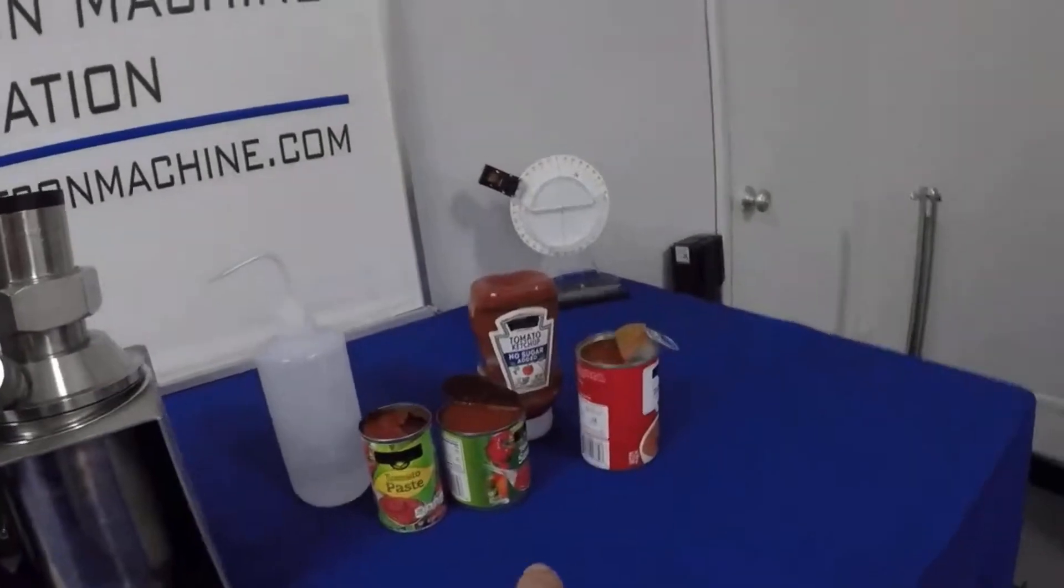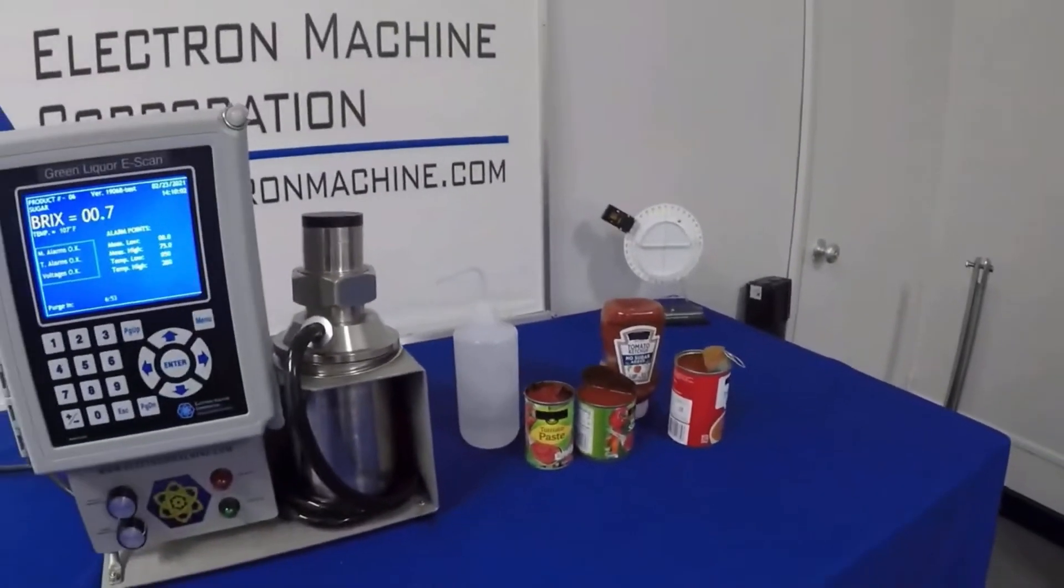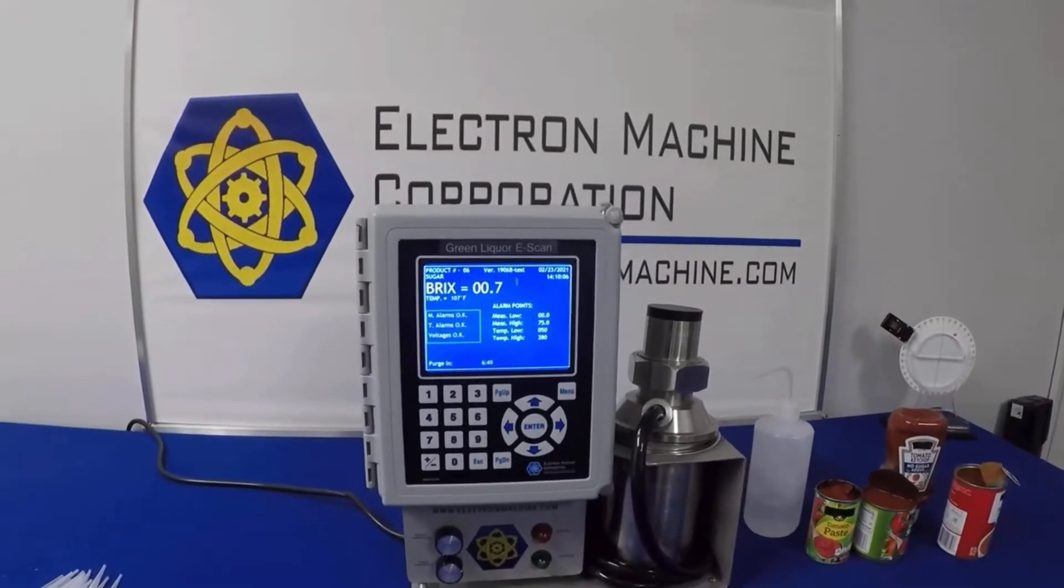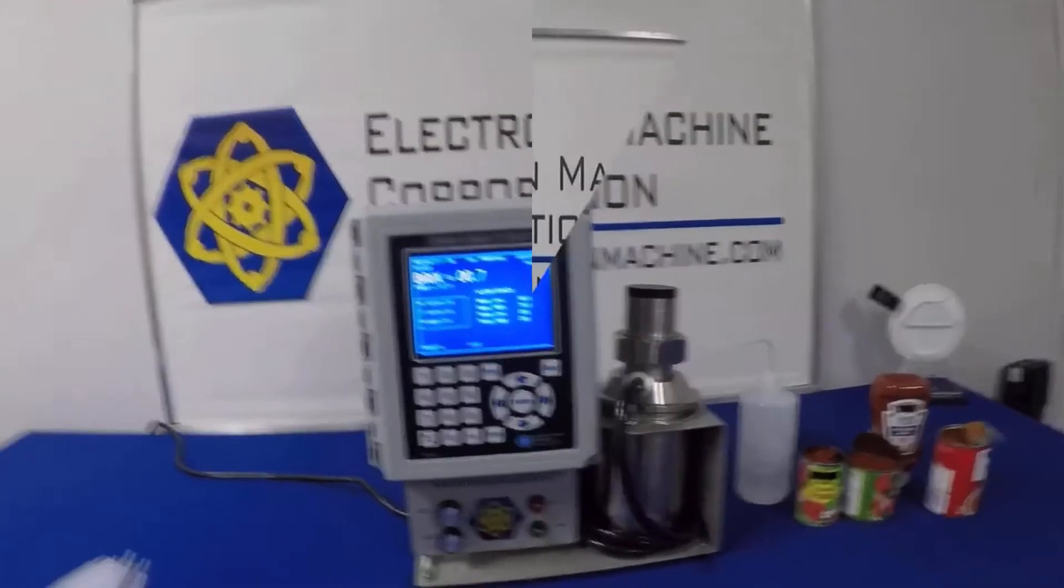Our refractometer is used in a variety of industries throughout the world. The next series of videos will highlight some of the most common applications for our refractometers. Today we have our NPR e-scan set up in a static display. We have a variety of tomato products that we are going to test to show you how the e-scan refractometer can read and measure different tomato products.